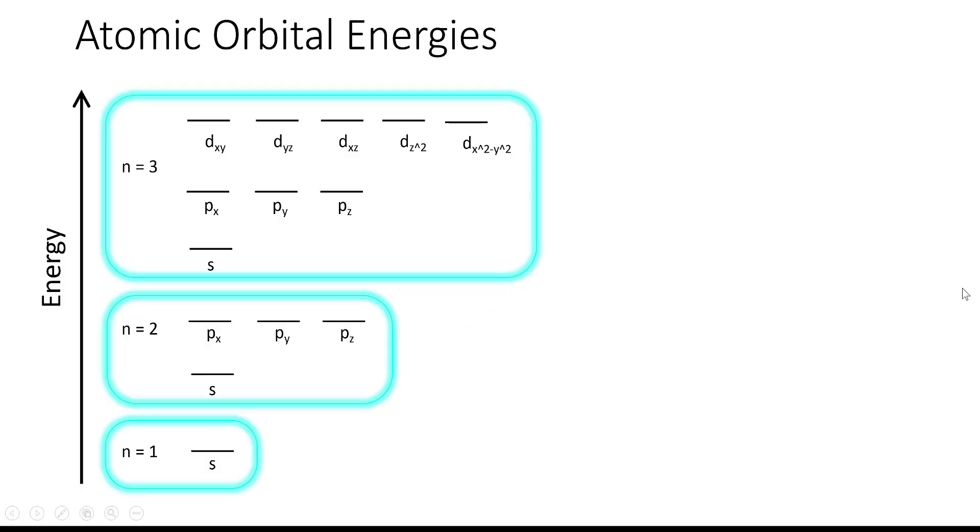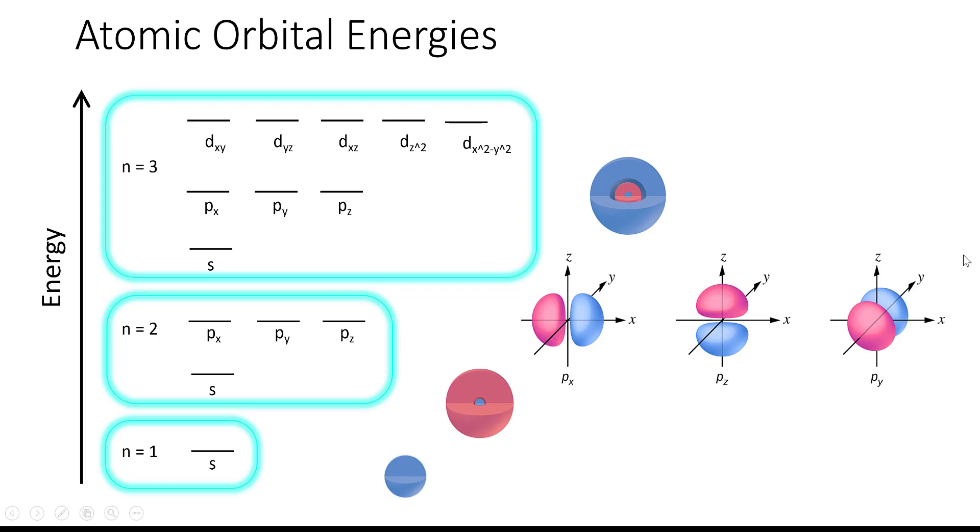And as you probably would have guessed, the energies of these orbitals increase with the increasing number of nodes. So for instance, the 1s orbital does not have any nodes and it's the lowest energy orbital. The second shell orbitals have one node, so they are higher in energy. Then the third shell orbitals have two nodes, and so on and so forth.